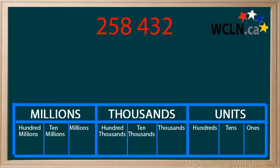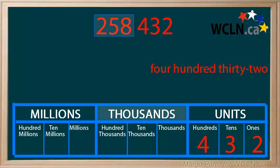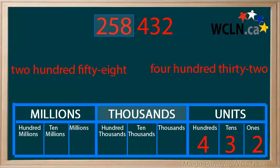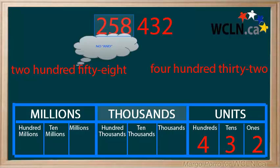Let's zoom in to see what this means. We've already looked at the ones, tens, and hundreds in this number — we say four hundred thirty-two. The digits in the thousands should be treated the same way. First, say the number words together: two hundred fifty-eight, with no AND.